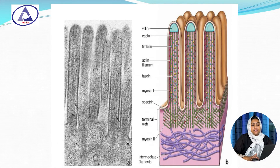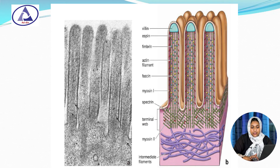These figures show the structure of the microvilli. This is the villin protein, this is fimbrin, within the core there is a presence of actin filaments, this is fascin protein, this is myosin protein, and within the terminal web that is myosin 2.